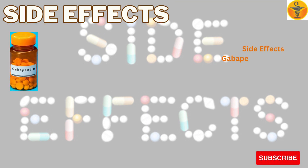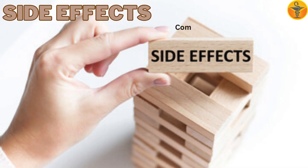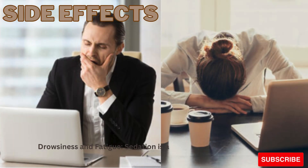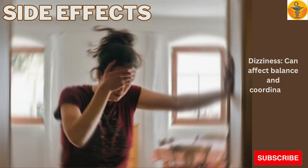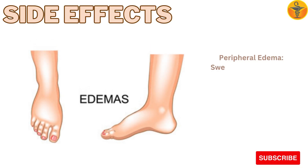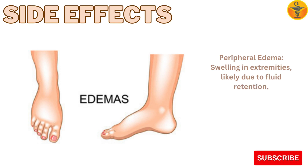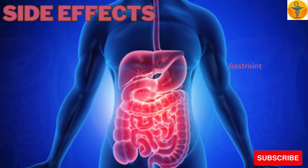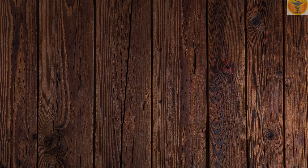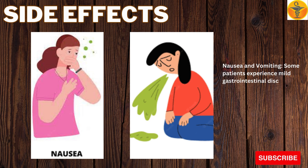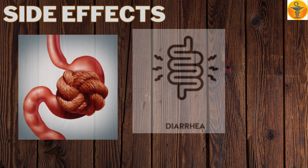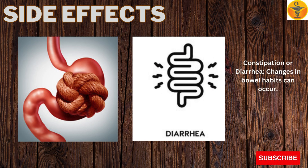Side Effects. Gabapentin can cause a range of side effects, which may vary in severity. Common side effects include drowsiness and fatigue — sedation is a frequent side effect, often used therapeutically for insomnia or anxiety. Dizziness can affect balance and coordination. Peripheral edema, swelling in extremities, is likely due to fluid retention. Gastrointestinal effects include nausea and vomiting, with some patients experiencing mild gastrointestinal discomfort, as well as constipation or diarrhea.